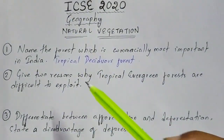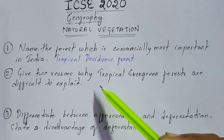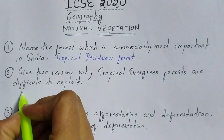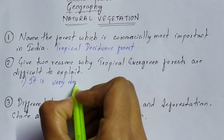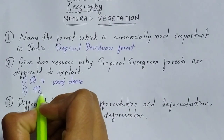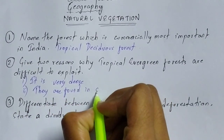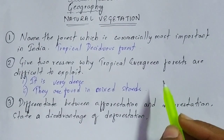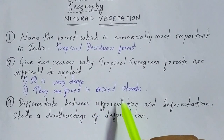Question number two: give two reasons why tropical evergreen forests are difficult to exploit. This is again repeated most of the time in your board examination. The two reasons are: first, they are very dense; and second, they are found in mixed stands. These are the two important reasons why tropical evergreen forests are difficult to exploit.